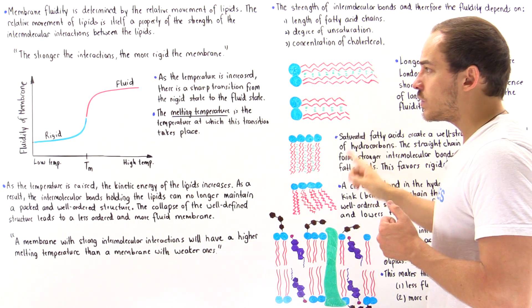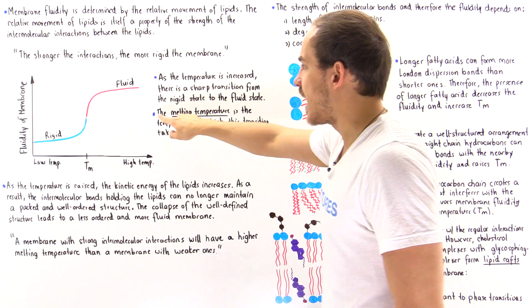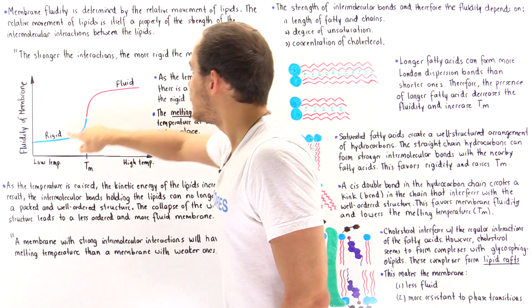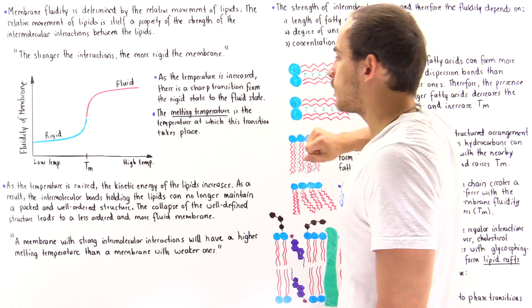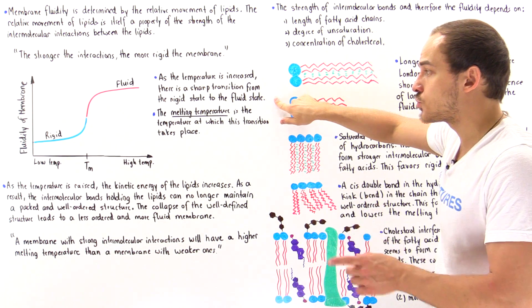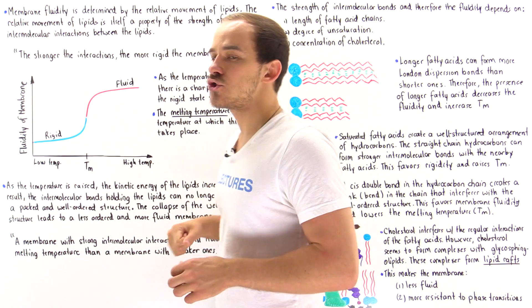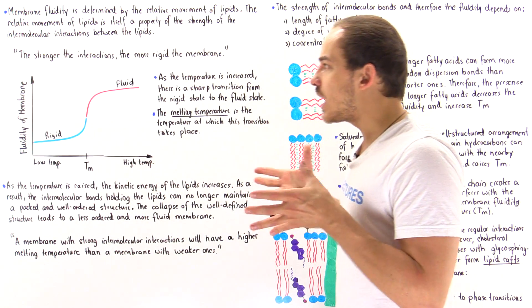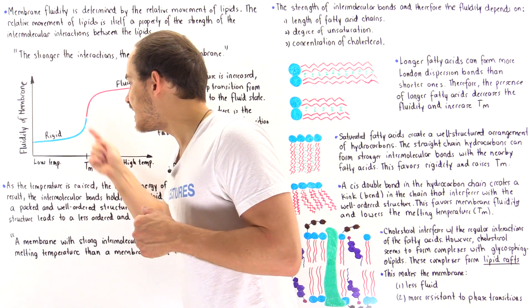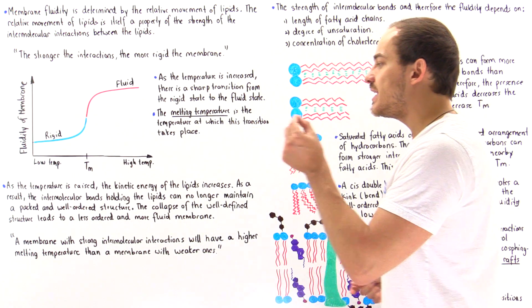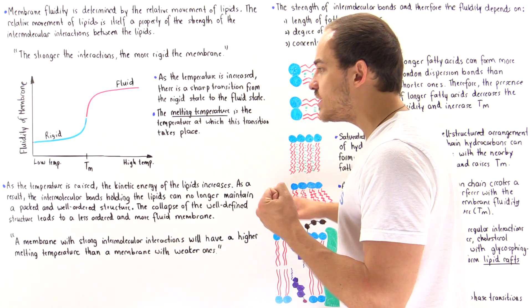As the temperature is increased, there is a sharp transition from the rigid state to the fluid state at the melting temperature. Looking at the microscopic level, as the temperature is raised, the kinetic energy of the lipids and other molecules increases.